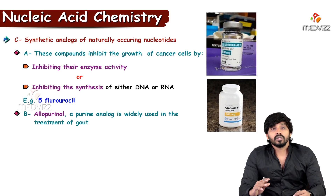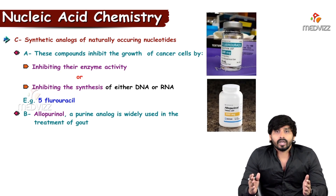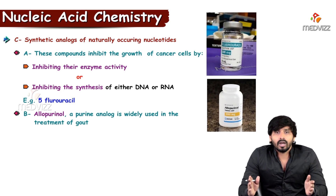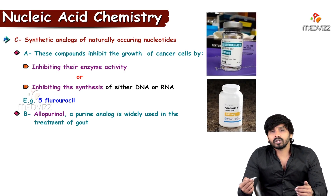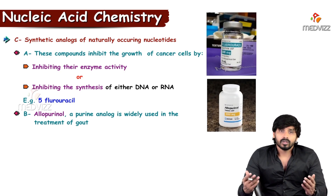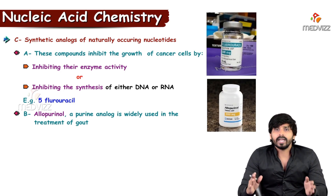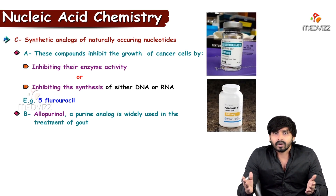Nucleotides also have commercial uses as synthetic analogs. Cancer is uncontrolled cell growth — the cell cycle has checkpoints that stop growth, but in cancer these checkpoints fail and cell division continues uncontrolled. Cancer cells require DNA and RNA for regeneration, which in turn require nucleotides. If these nucleotides are not provided, there is no DNA or RNA, and therefore no cell regeneration.